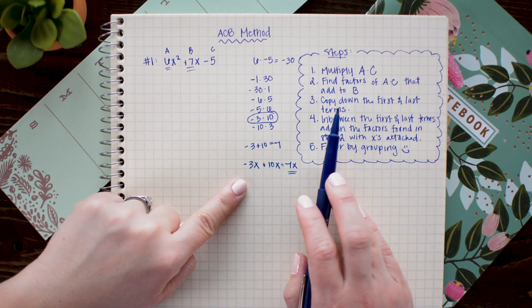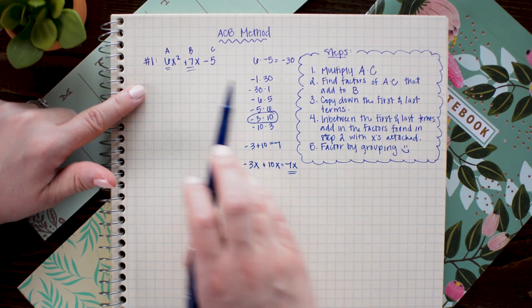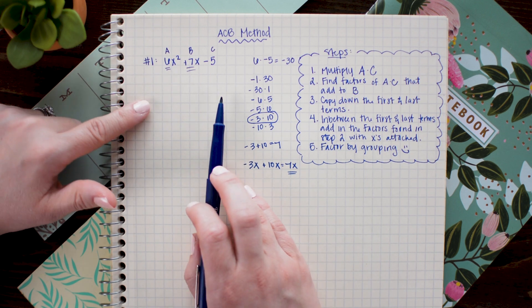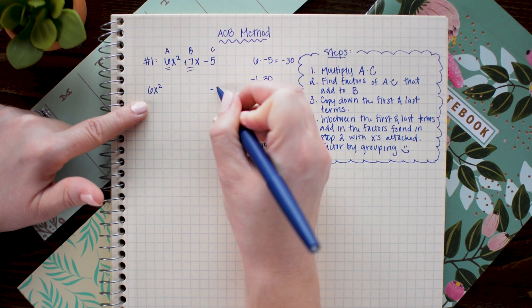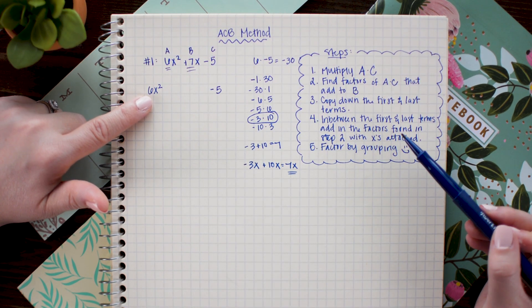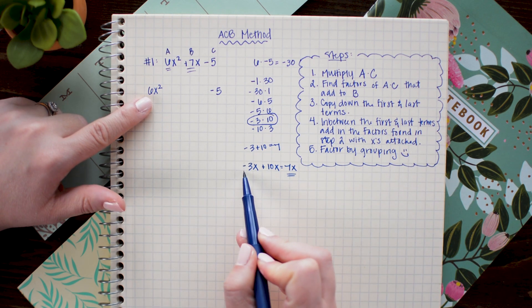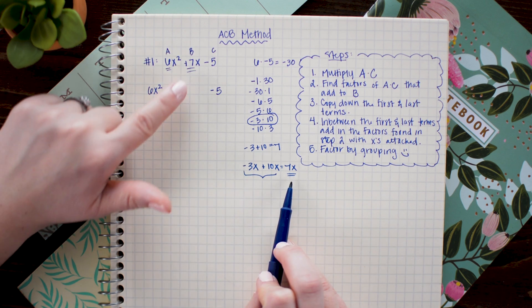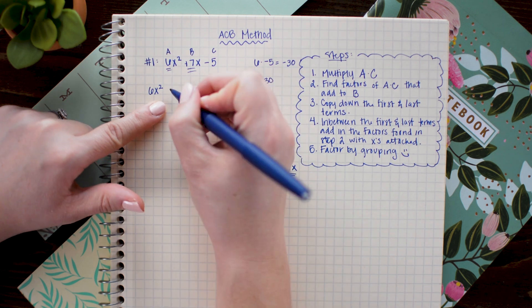In the next step we are going to copy down the first and last terms. So I'm simply going to go over here take the 6x squared and the minus 5 and write them on the next line with some space in between. Then in step 4 in between the first and last terms I'm going to write down the factors we found in step 2 with the x's attached. So that's this guy right here. So remember this is going to replace 7x. So right in between these I'm going to write negative 3x plus 10x.